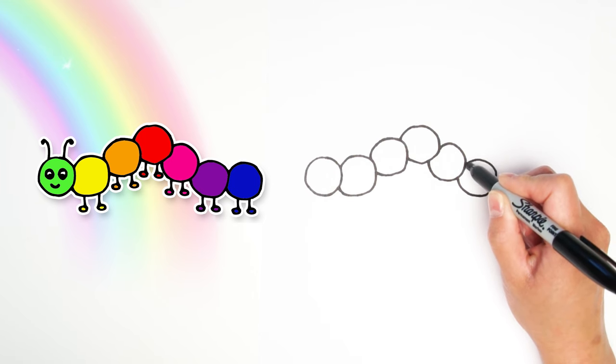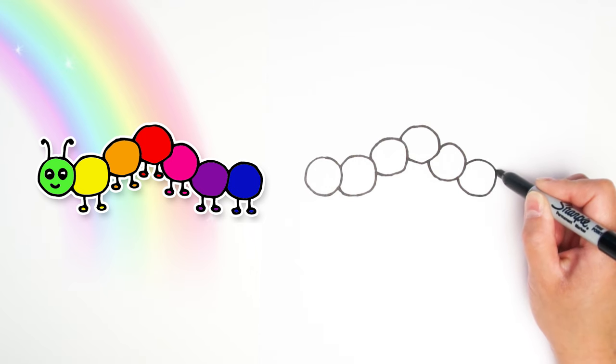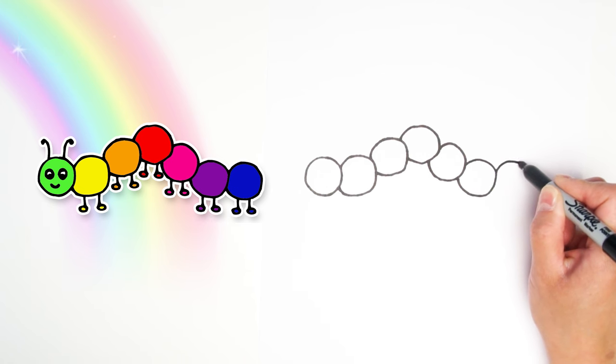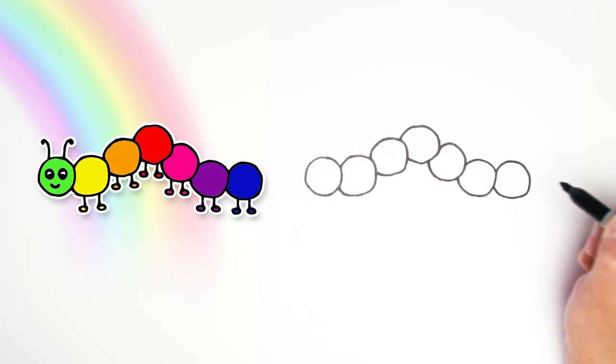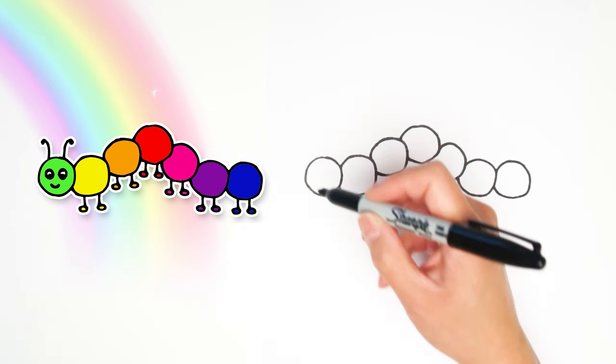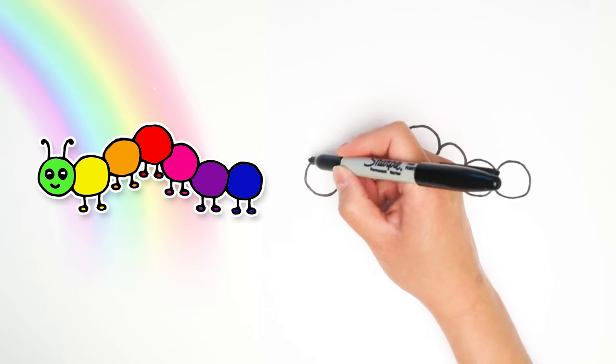Keep going. Adding circles. I have seven circles, but you can do as many as you want. And there we go. We have our head and the whole body made with circles.